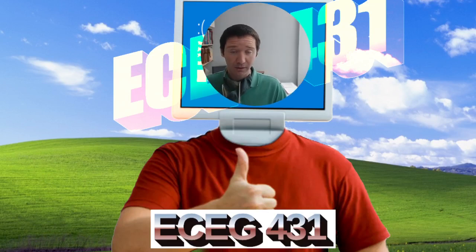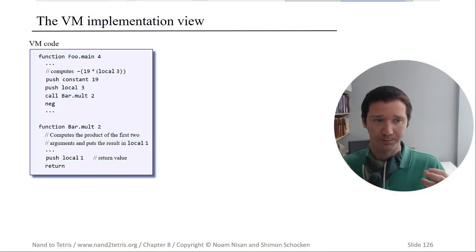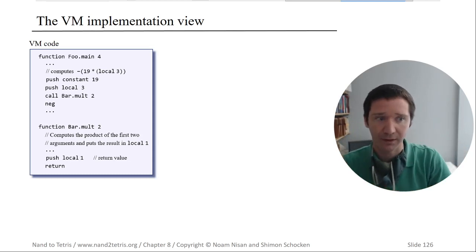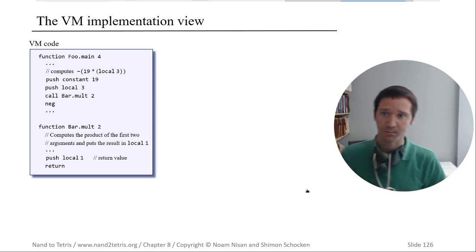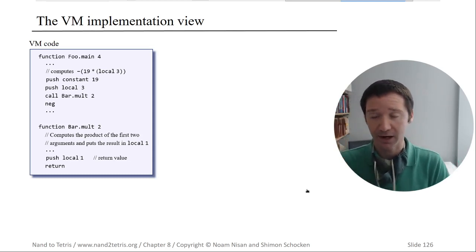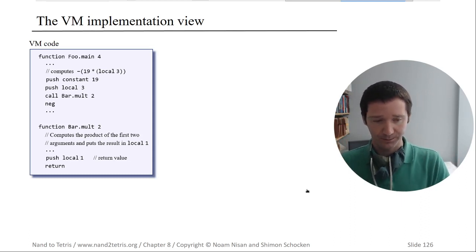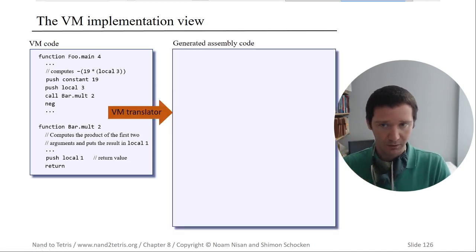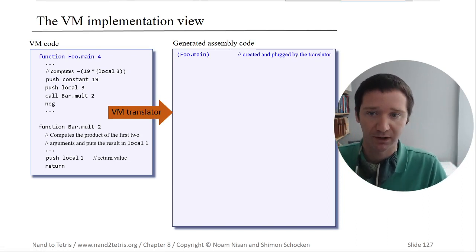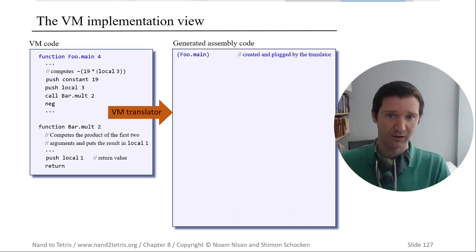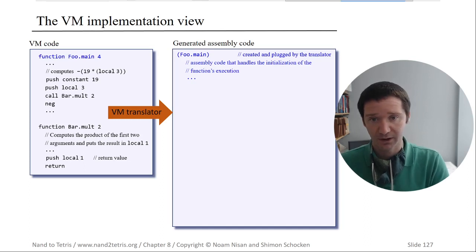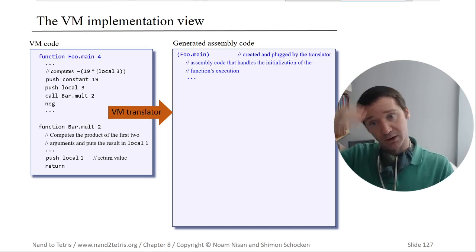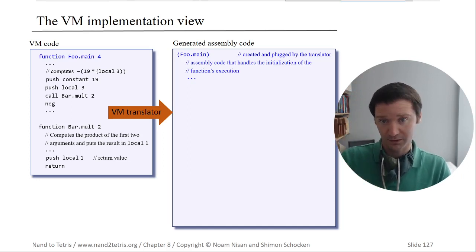Welcome. This is an overview of virtual machine implementation, looking at what's going on with VM programs. We have a function foo.main that computes negative 19 times local 3. When we compile this VM code, we create a foo.main label, handling the initialization of the function execution. We need to allocate memory for four local variables, which means zeroing out the stack four times.